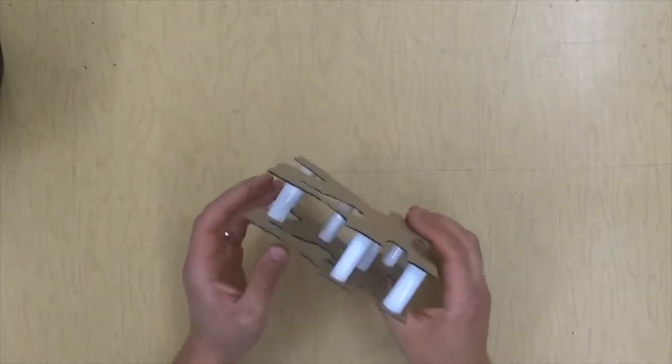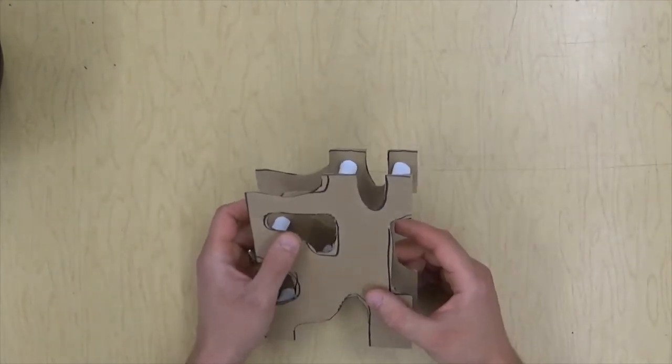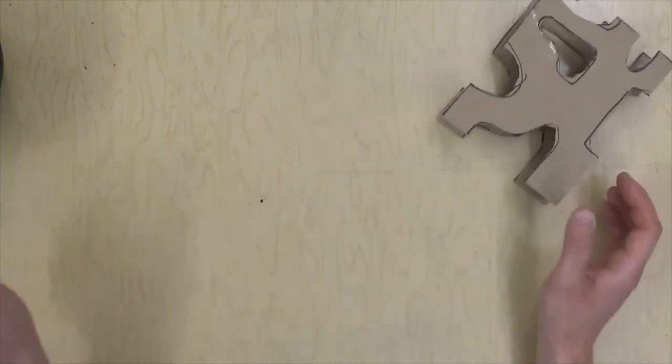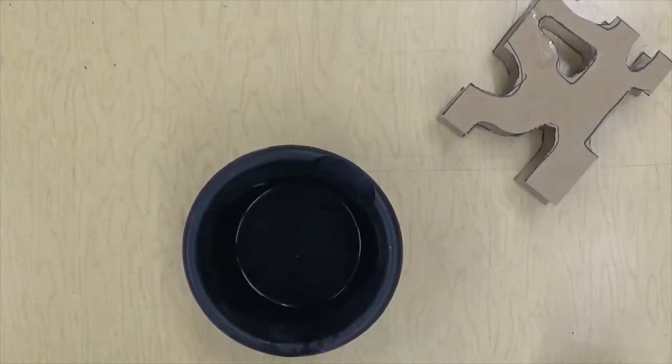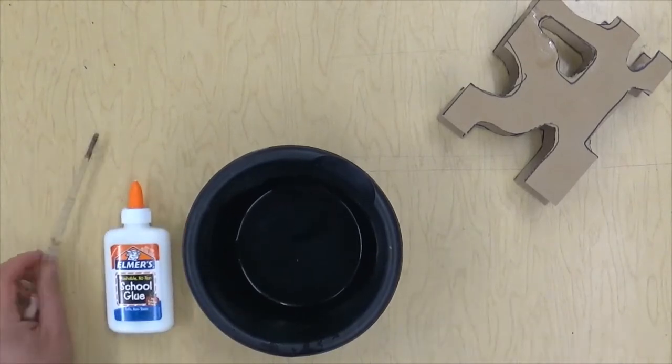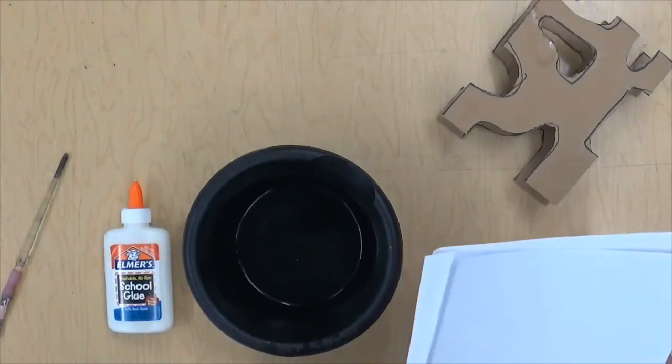So once your glue is dry, you've got a sculpture that stands up, and it's pretty strong. So now the next part is going to be a little messy. We've got some water, and we're going to have to get our glue out. And I've got a brush to stir it up with, but you can stir it up with anything. We're going to mix water and glue together and do some paper mache.